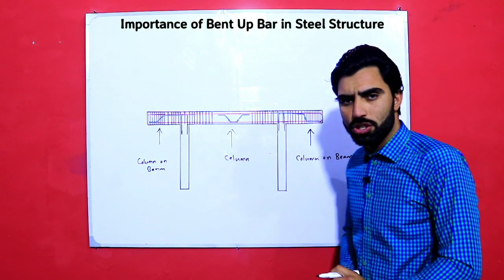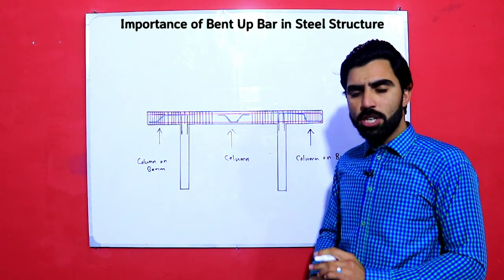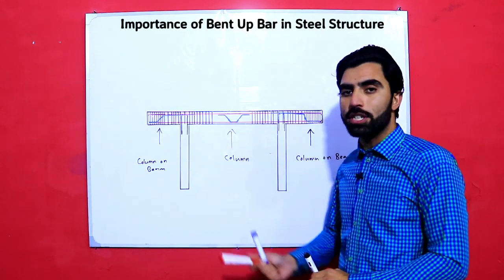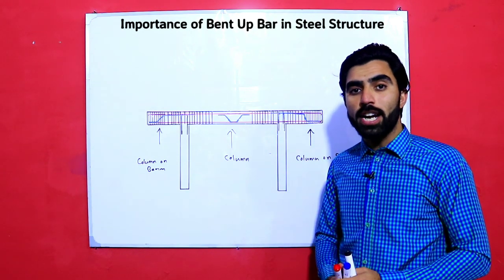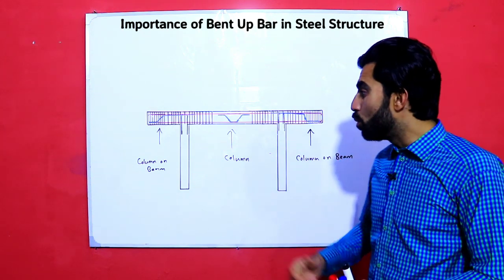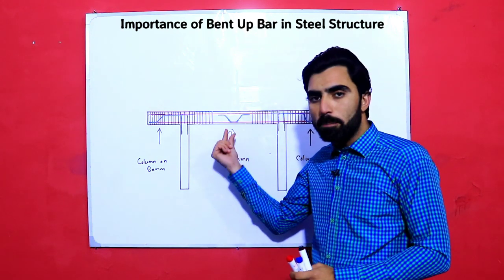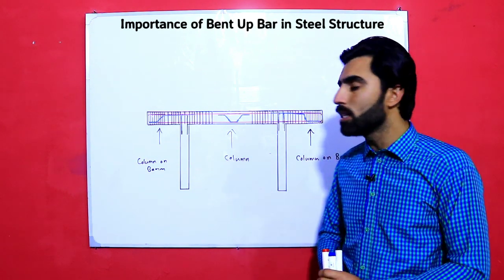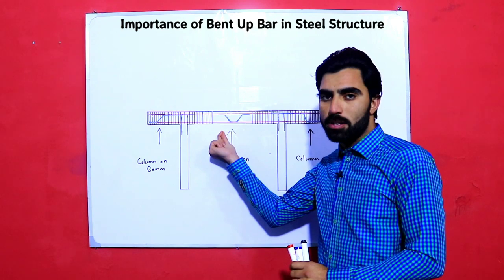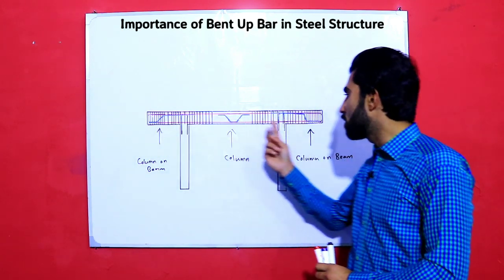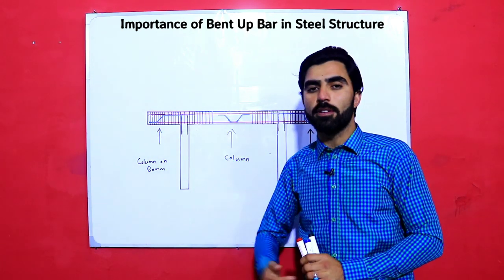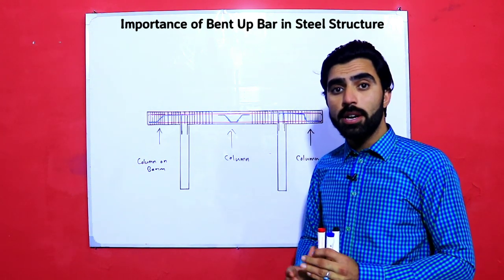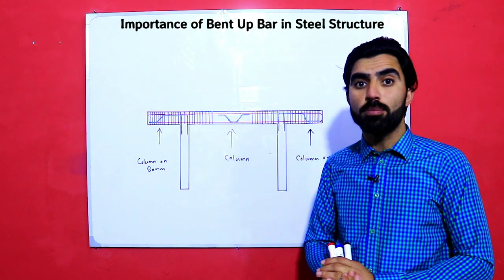It's a strange question and many students, specially civil engineers, are confused about how we can provide a column on this point. Therefore, we will also discuss the importance of bent-up bar, because without bent-up bar we are not able to provide a column in this place, and also at these free end points. So the topic is: importance of bent-up bar and how we can provide columns on the beam.